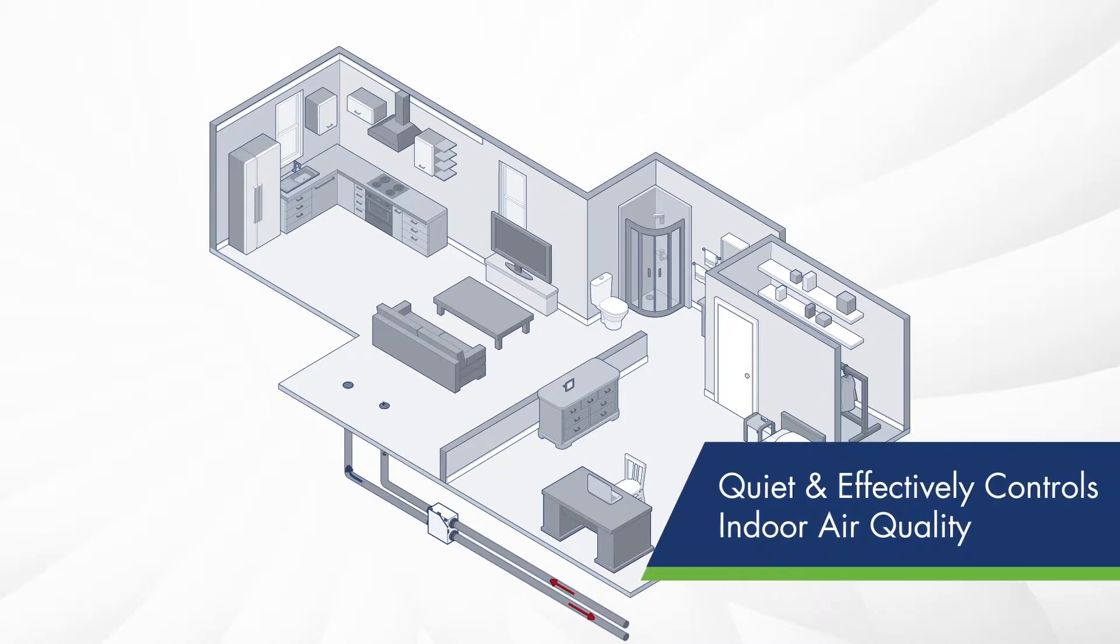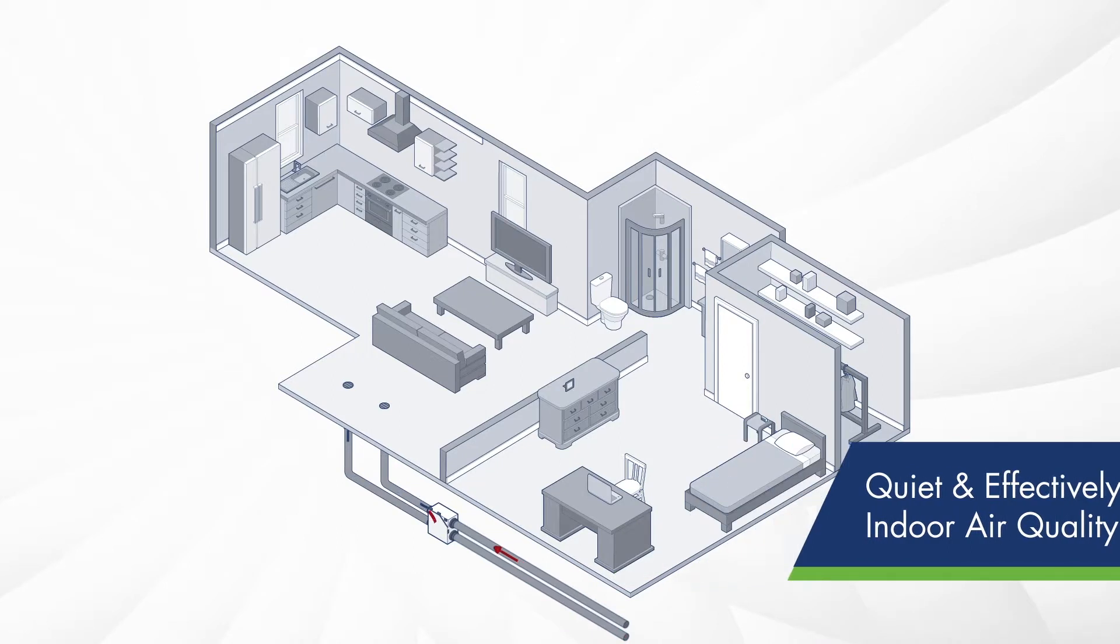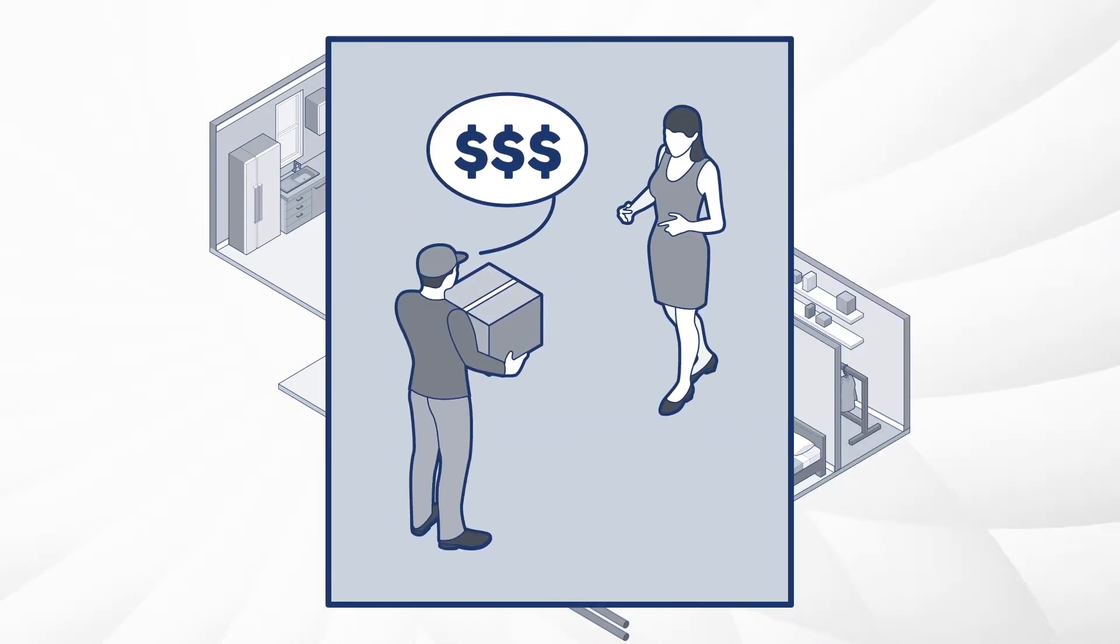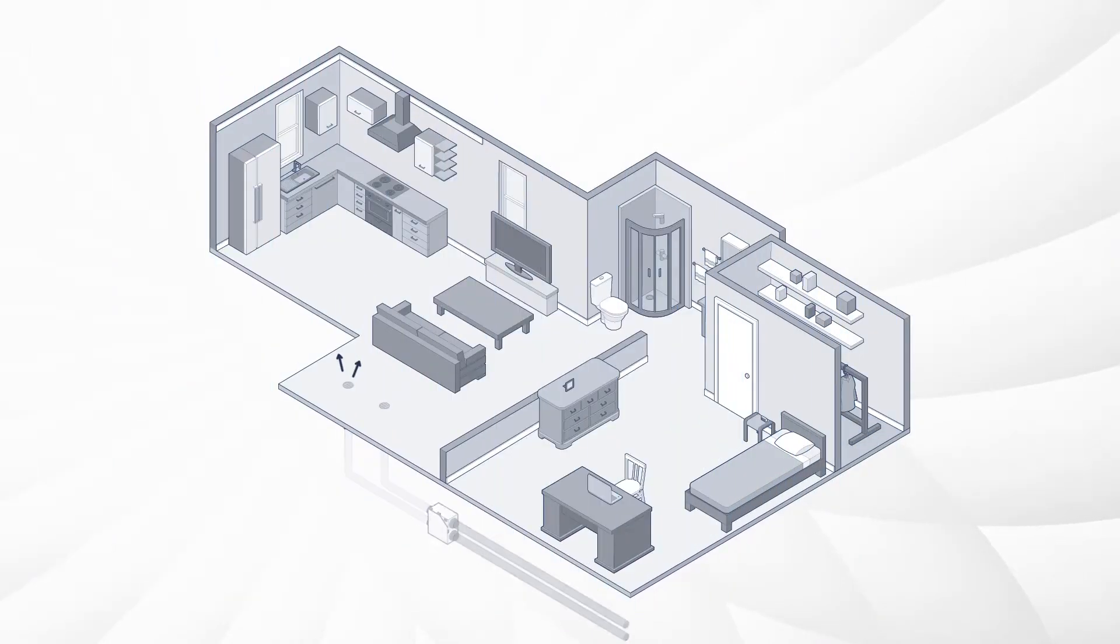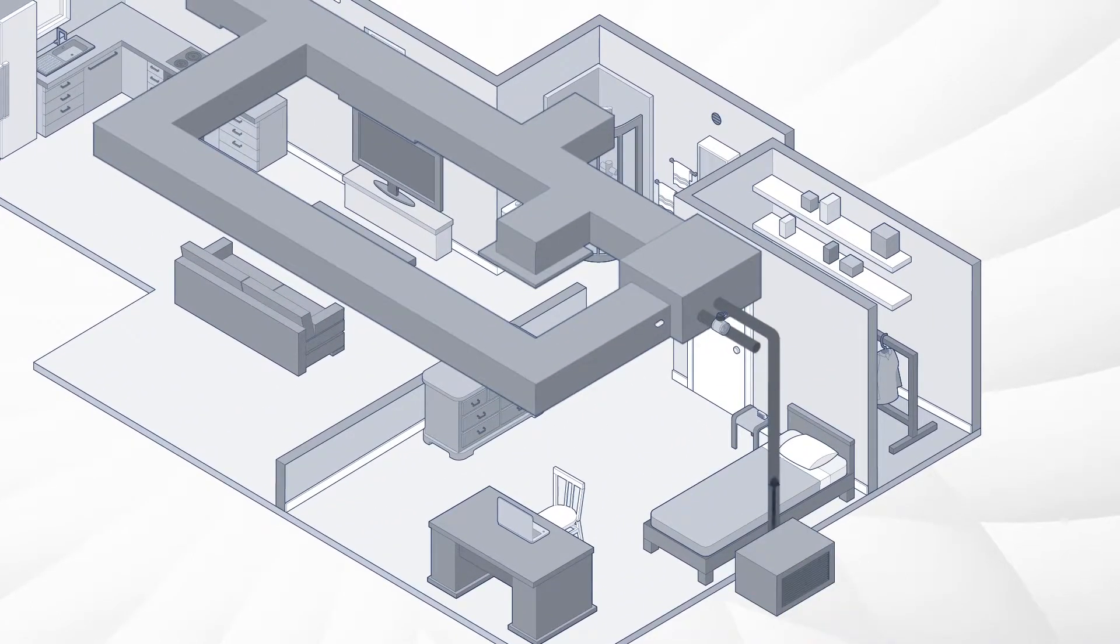Balanced ventilation is quiet and can be effective in controlling indoor air quality, but tends to be more expensive due to equipment and installation costs. Supply ventilation brings in fresh air from a known source and circulates the air through the home.